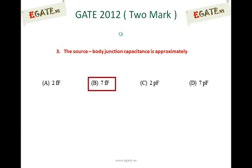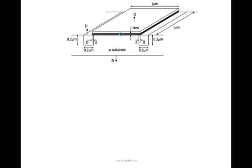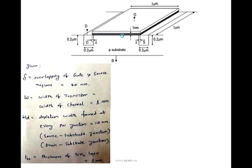We are going to calculate source-substrate capacitance. Source body capacitance is also considered as source-substrate junction capacitance. The other names for the substrate are substrate, body, and bulk. For the source body junction capacitance, the N+ source region interfaces with the P-type substrate (body), forming a PN junction across multiple surfaces — across this portion, across this portion, and across this portion.